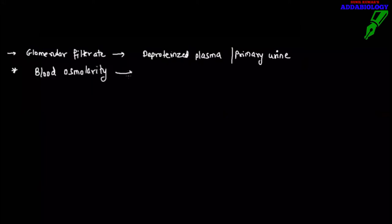Blood osmolarity normally is 290, but we take it as a round figure of 300 because 300 will help us understand the osmolarity better. So I am going to take 300 as a round figure to make things simpler.